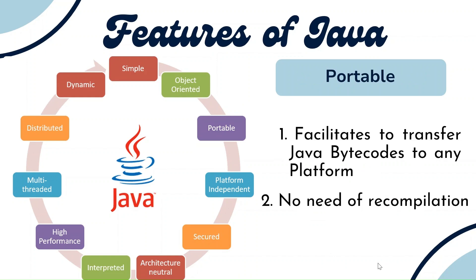Now coming to the third feature: portable. We can transfer files. When you develop an application on one operating system and compile your program, you get a .class file. The .class file contains bytecodes, and these bytecodes are not the actual machine code. Once we develop bytecodes on one system, we can copy or transfer them to any other operating system — which is another platform — and run them directly with the Java Virtual Machine. There is no need for recompilation since the bytecodes are already compiled; they just need to be interpreted by the JVM.